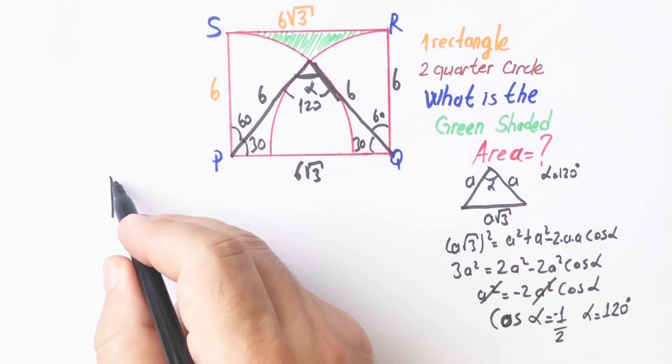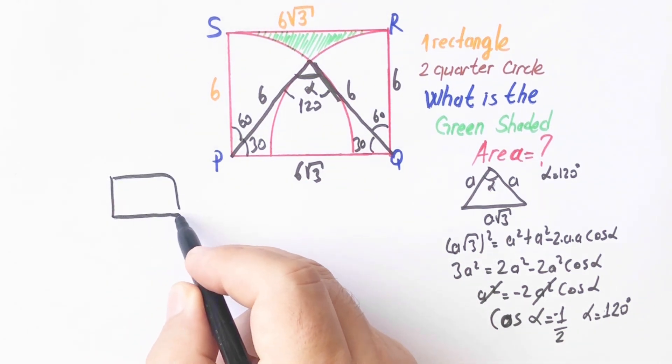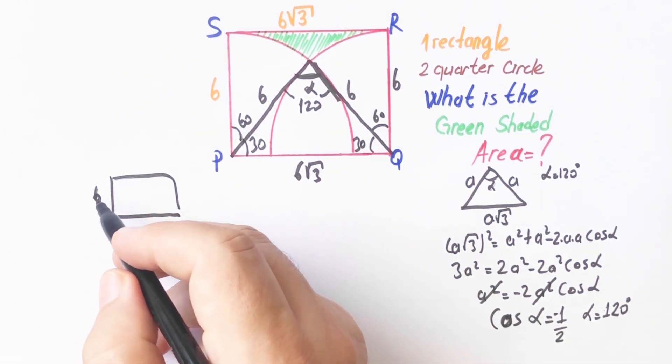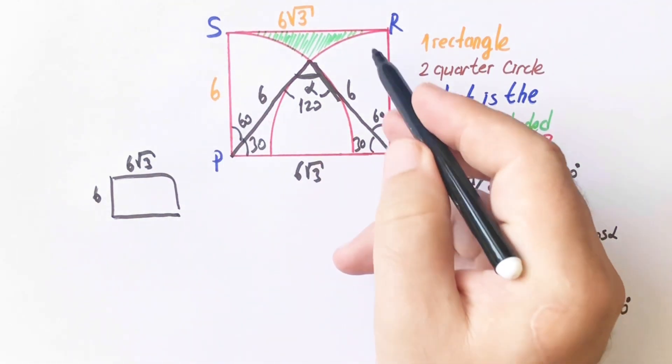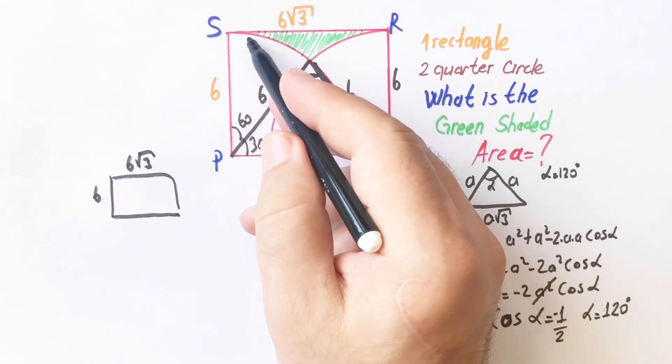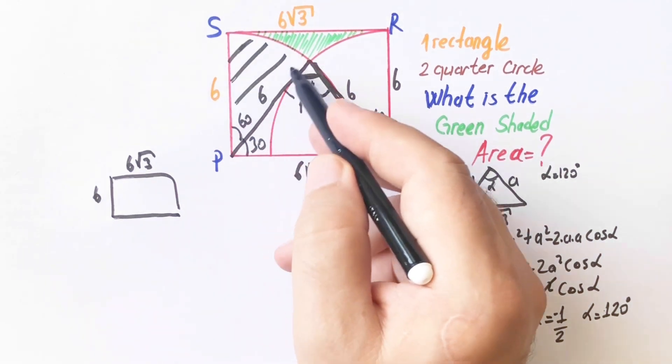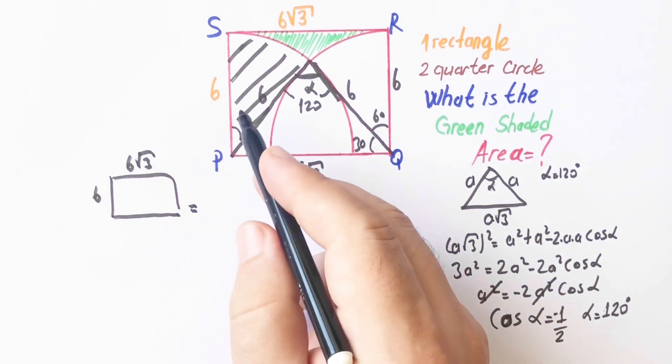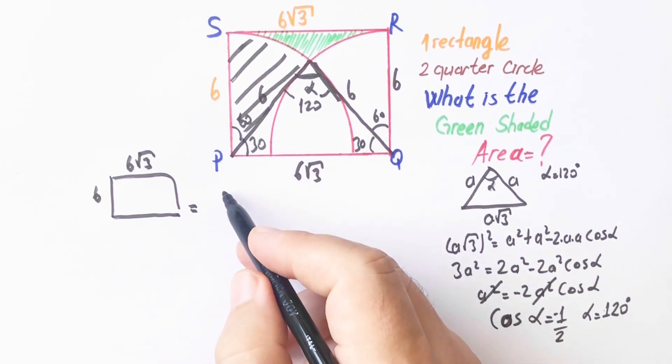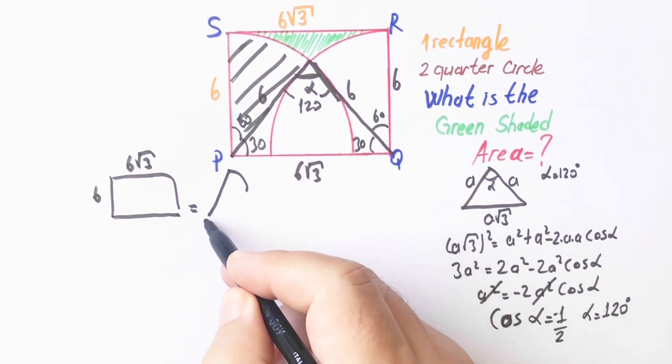If we calculate the square area, the square area is equal to the circle sector area, and let's draw here, plus the stringed area.